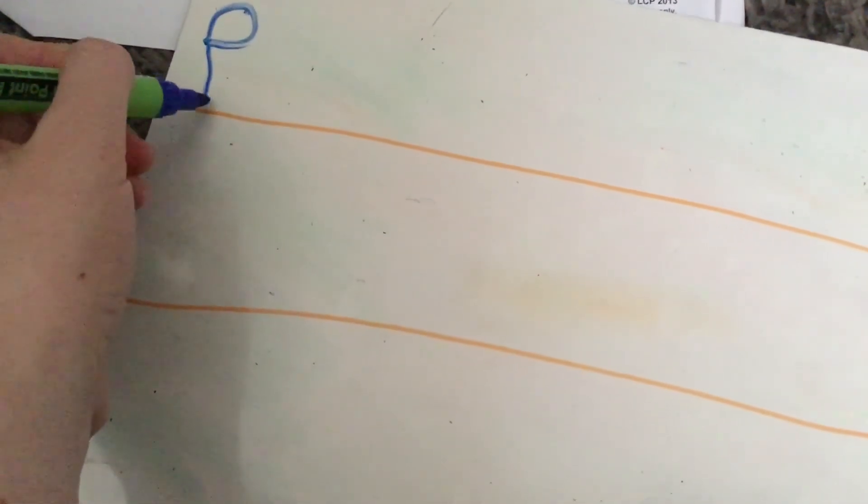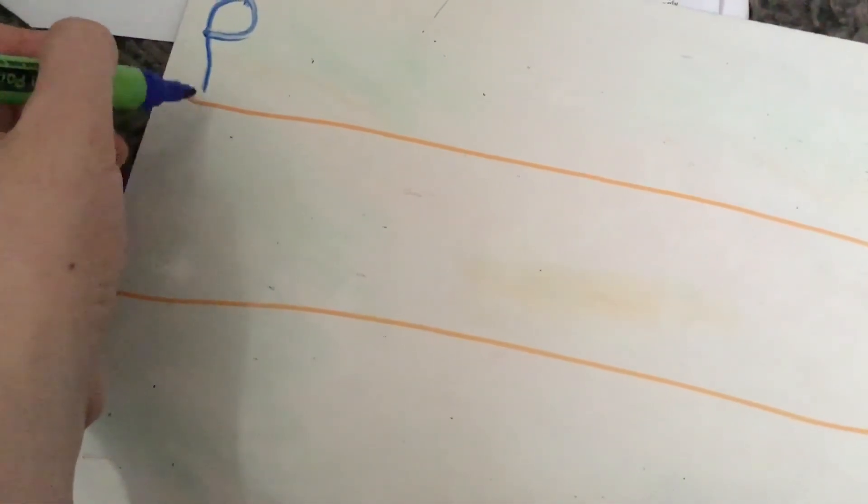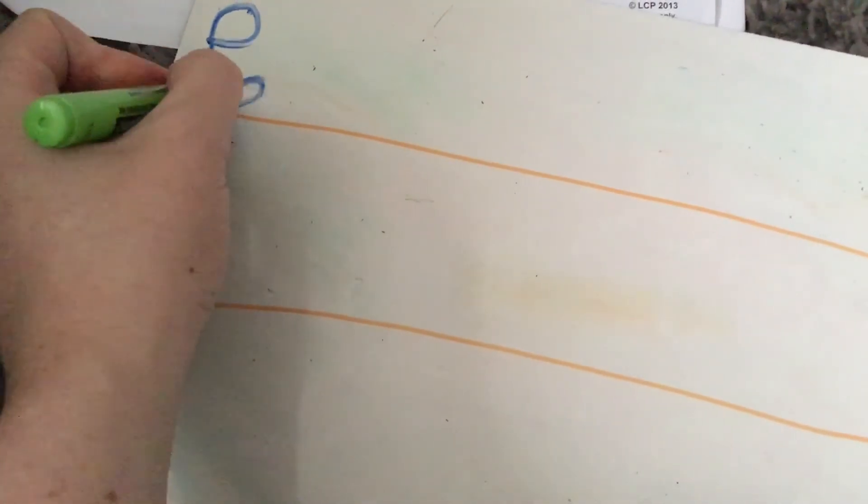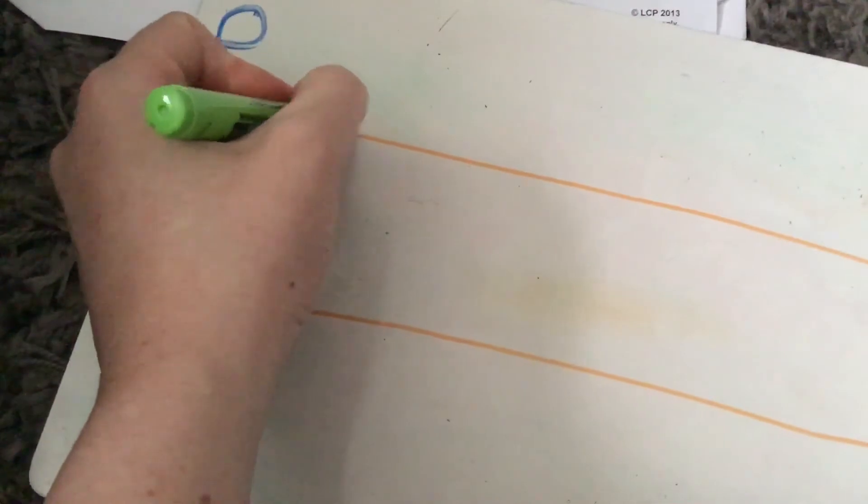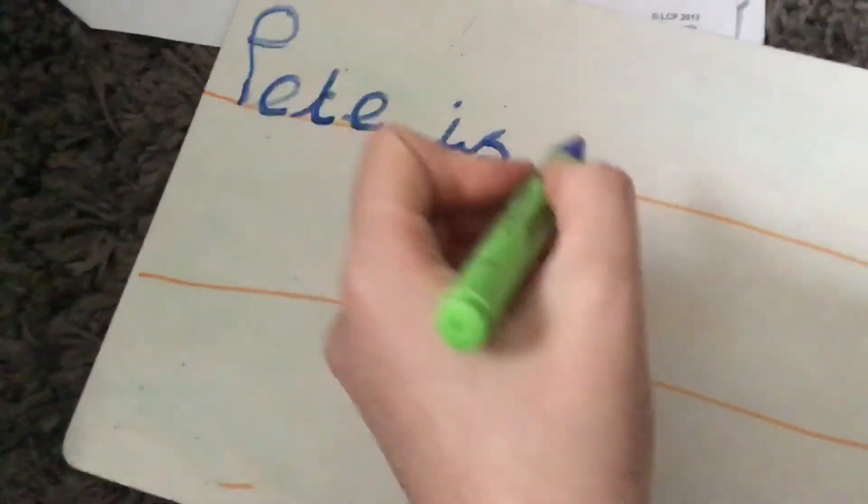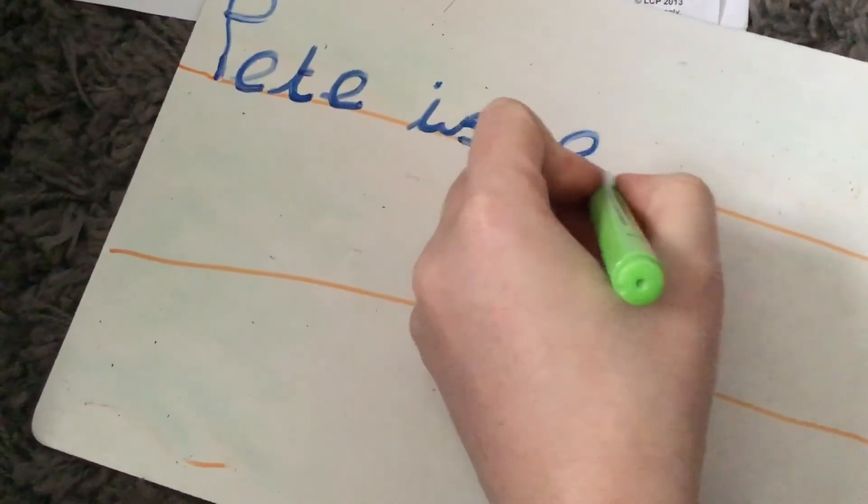Capital P. So we want our beginning of our P to be on the line, standing on the line. So Pete, we know how to do E split digraph now. Pete is E. E. Good.